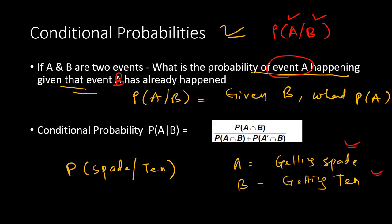When we try to find the conditional probability P(A|B), it is P(A intersection B) divided by P(A intersection B) plus P(A complement intersection B). In the numerator, it is the probability of the two events jointly happening — that means both picking a 10 as well as a spade. The second term in the denominator, P(A complement intersection B), covers the case of not spade — meaning if not spade, there are three other possibilities out of the four cards.